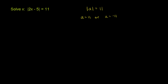If the absolute value of 2x minus 5 is equal to 11, that means that the stuff inside the absolute value sign either equals 11, or the stuff inside the absolute value sign is equal to negative 11.